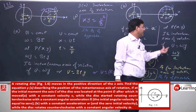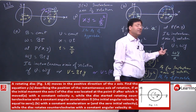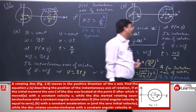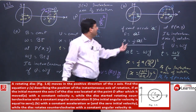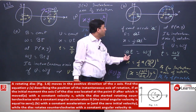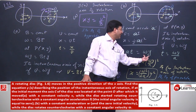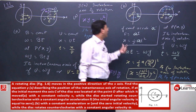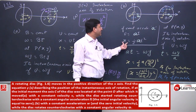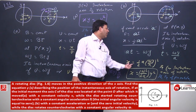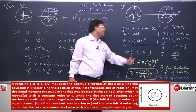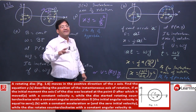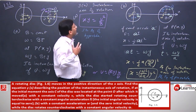This is the instantaneous axis of rotation. The condition applied is that velocity equals ω·y. From that condition we extracted time t, substituted into x = ½·a·t², and obtained the equation for the instantaneous axis of rotation in x and y.